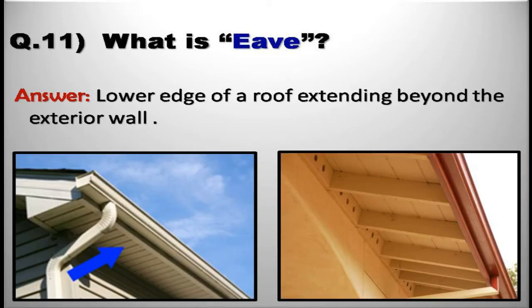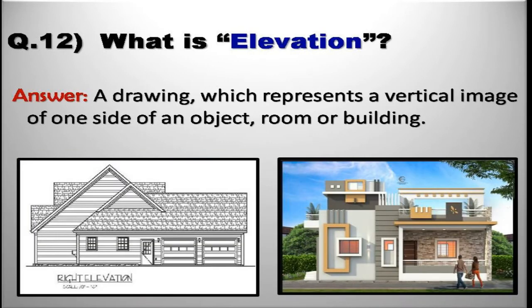What is eaves? The lower edge of a roof extending beyond the exterior wall. What is elevation? A drawing which represents a vertical image of one side of an object, room, or building.